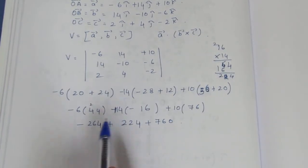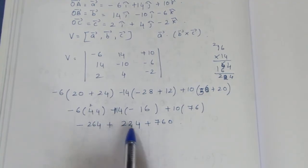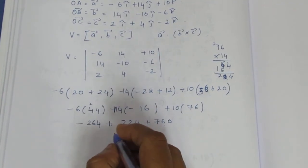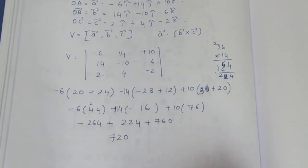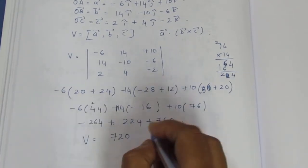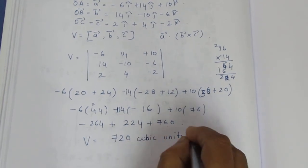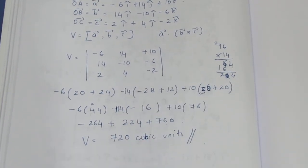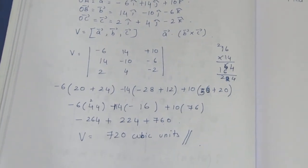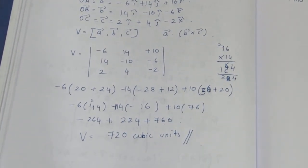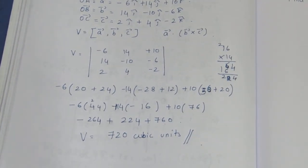So first, solve it. Same number, so minus. Minus 264 plus 224 plus 760... it is 720. This is volume equal to cubic units. So volume is 720 cubic units. That is the sum. Thank you.